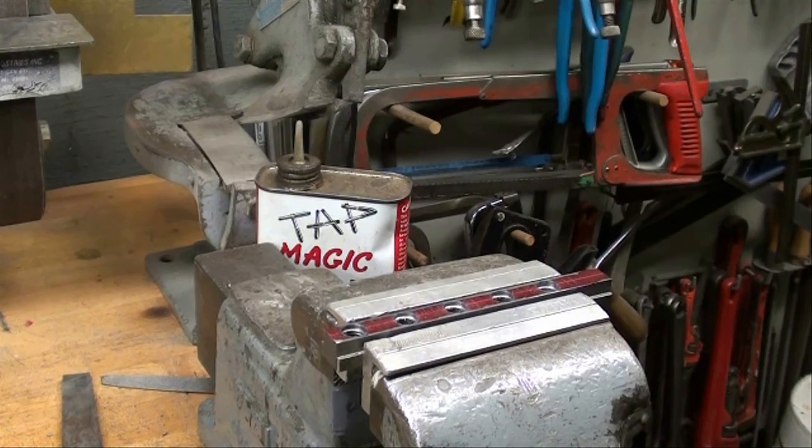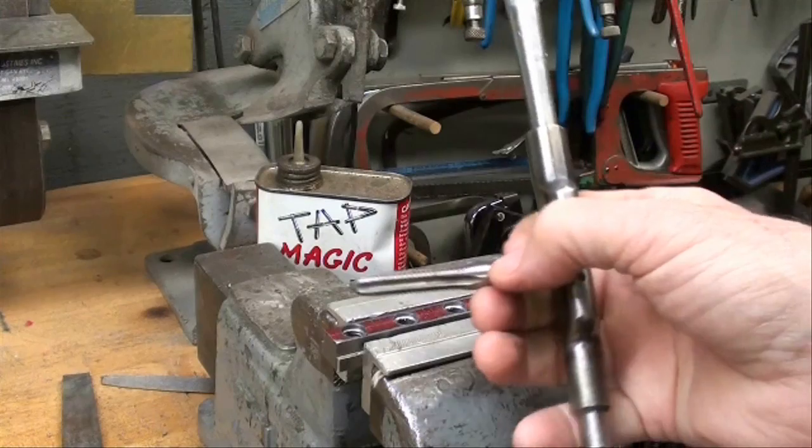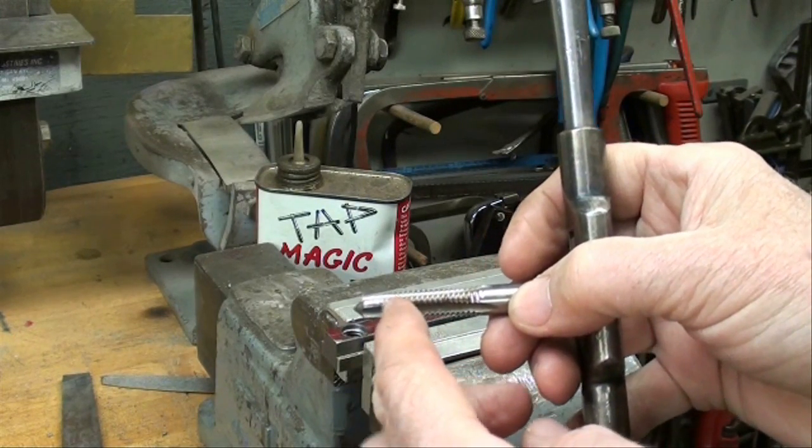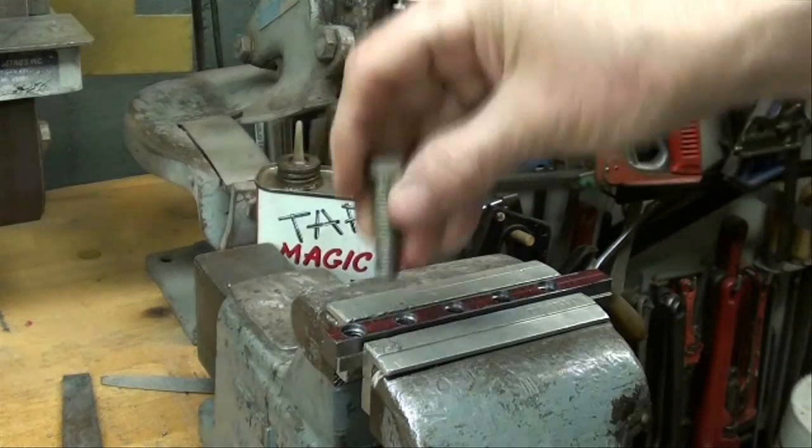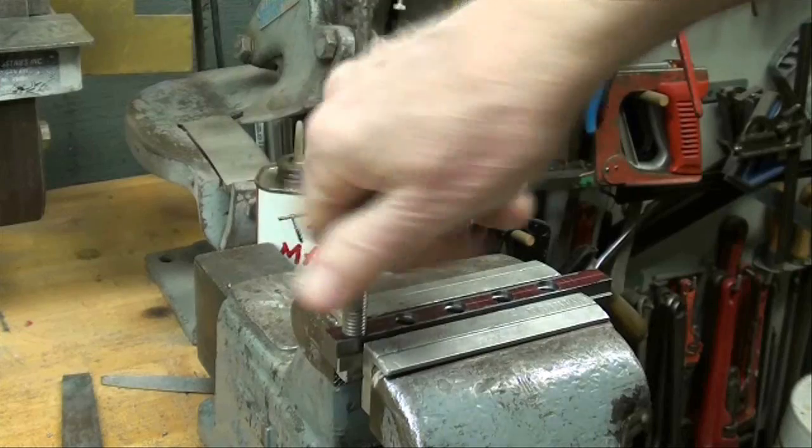I have already tapped one hole right here and I determined by a little trial and error there that if I allow the tap to come out the bottom about a quarter inch it's going to give me just the right depth of thread so that the bolt bottoms out approximately